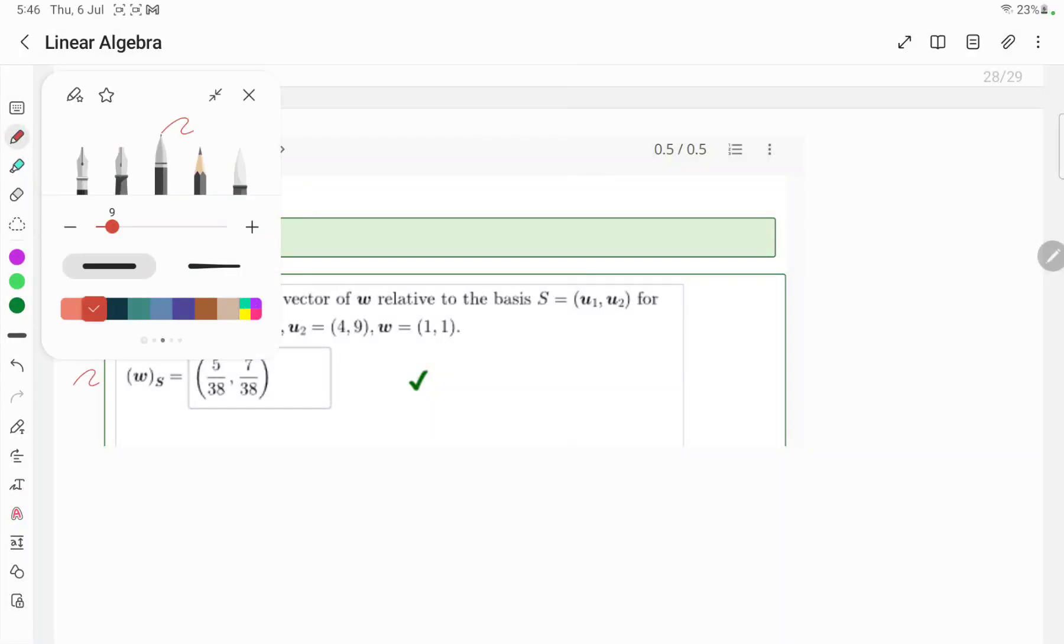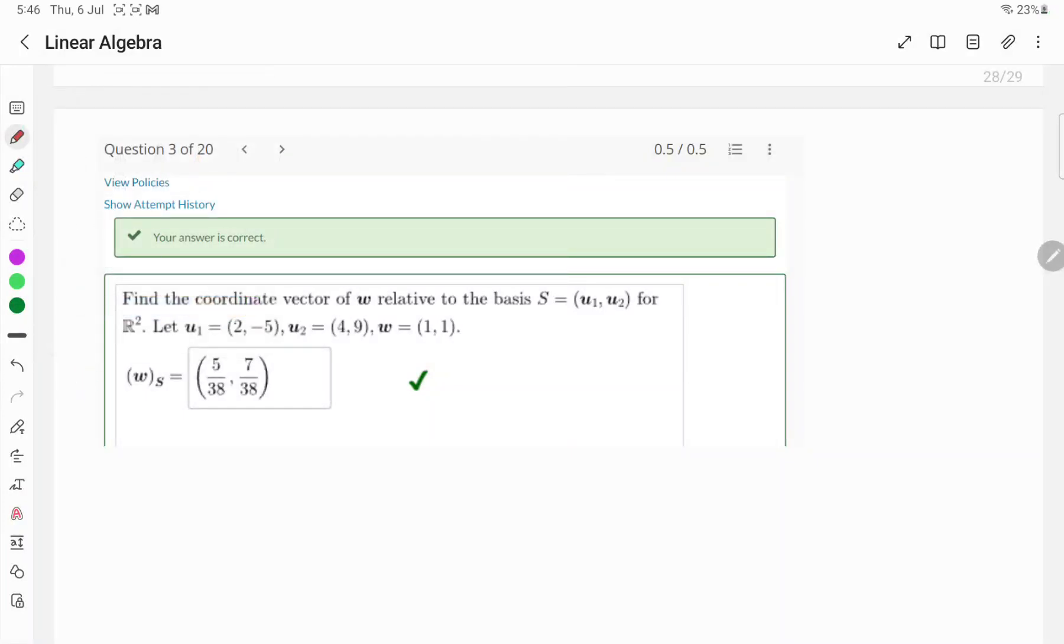Now let us do question number 3 for homework 5. Here you have the details where W is relative to the basis S which consists of two vectors U1 and U2 in R squared. U1 is (2, -5), U2 is (4, 9), and W is equal to (1, 1).